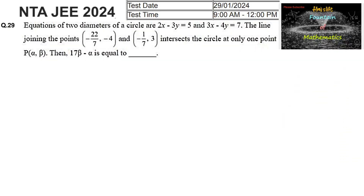The equations of two diameters of a circle are 2x minus 3y equals 5 and 3x minus 4y equals 7. A line joining two points intersects the circle at only one point P(α, β). We need to find 17 times (β minus α). Given a circle with two of its diameters provided.